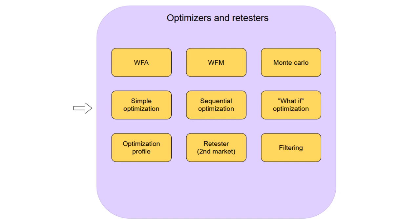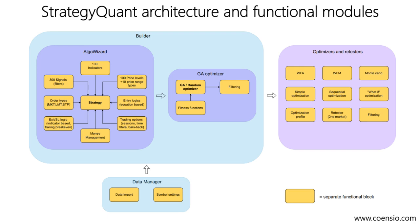The Optimizer Retester modules include several common strategy validation mechanisms, such as walk-forward analyzer, walk-forward matrix, Monte Carlo analysis, and more. Additionally, StrategyQuant has built in many strategy parameter filtering options and metrics, making it possible to filter out strategy candidates with poor performance. All of this makes StrategyQuant a comprehensive strategy development platform where every step involved in strategy creation and testing can be done in one place.